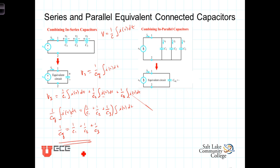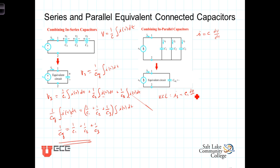Now let's do a similar derivation for parallel capacitances. We need to recall that the current in a capacitor is equal to C times dv/dt. We can write a KCL equation for this top circuit, and we have I sub S coming in, so I sub S will equal the current through C1 plus the current through C2 plus the current through C3, which is C1 dv/dt plus C2 dv/dt plus C3 dv/dt. Because they're in parallel, the voltage is the same across all of them — that's the definition of parallel.